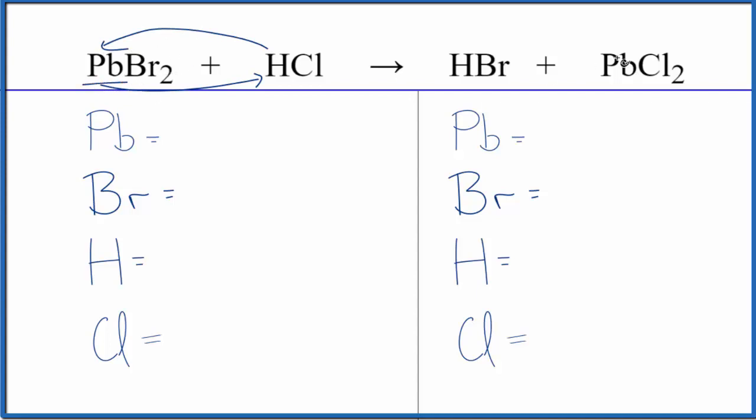The lead starts out with bromine and ends with chlorine. The hydrogen starts out with chlorine and ends with bromine. So this is a double displacement reaction.